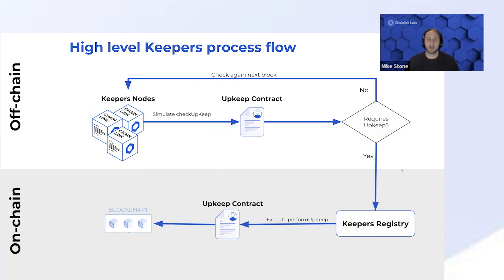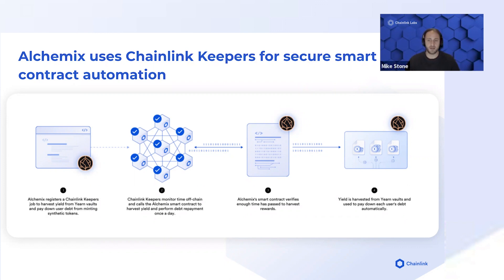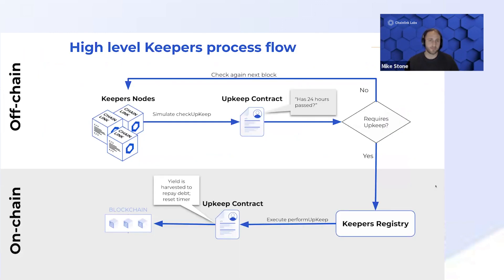Looking at how Alchemix is using Keepers today: Alchemix has registered a contract with the Keepers network, and that contract is simply having the Keepers network check to see if 24 hours has passed. As soon as that's the case, the Keepers network triggers a function that harvests yield, repays debt in the vaults and the transmitter, and then waits another 24 hours to trigger that same function again.